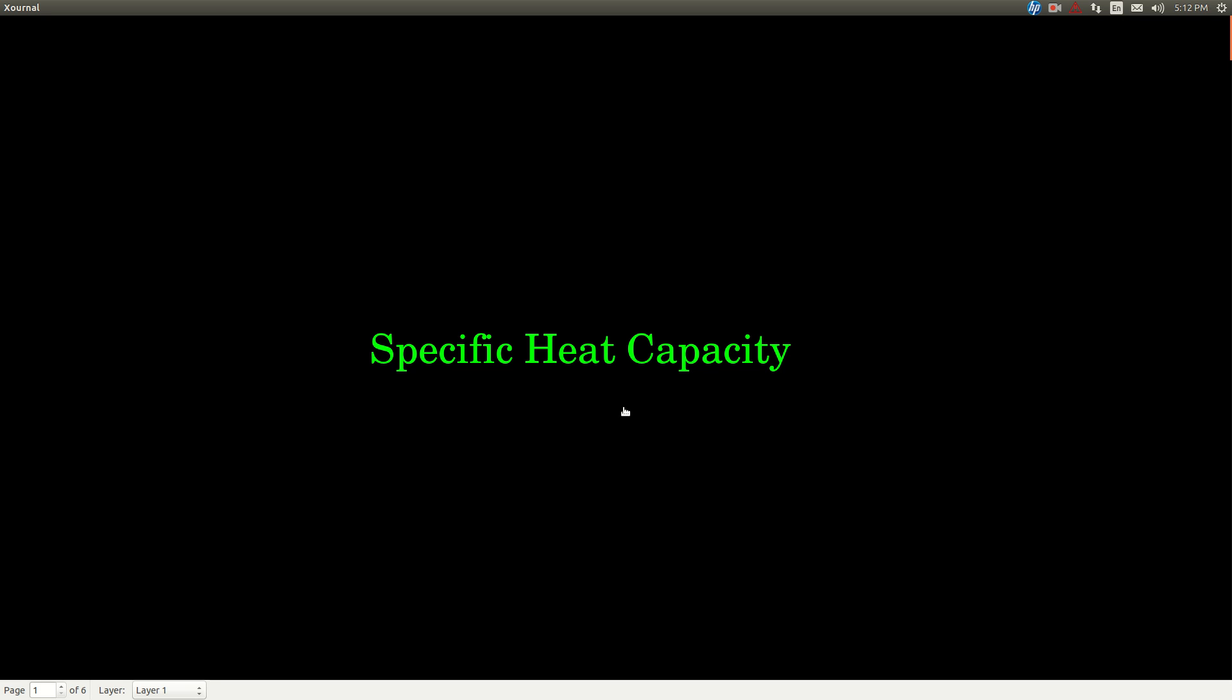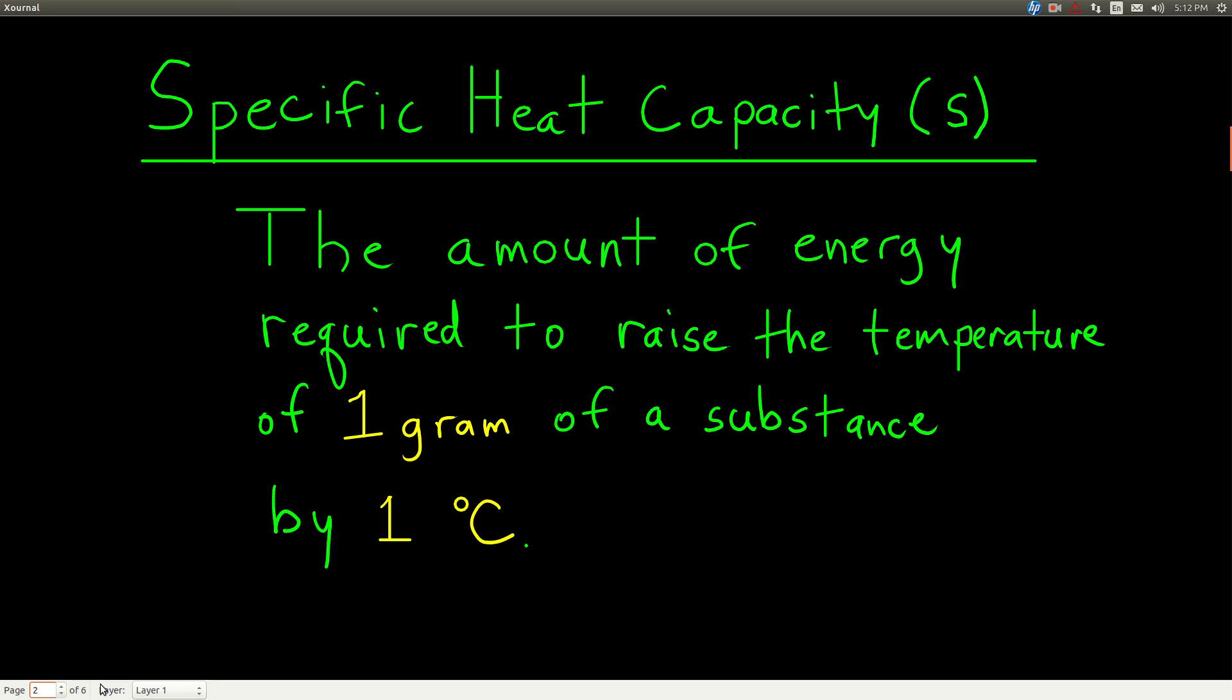In this video, we're talking about specific heat capacity. The definition of specific heat capacity, with symbol lowercase s, is the amount of energy that it takes to raise the temperature of one gram of a substance by one degree Celsius.